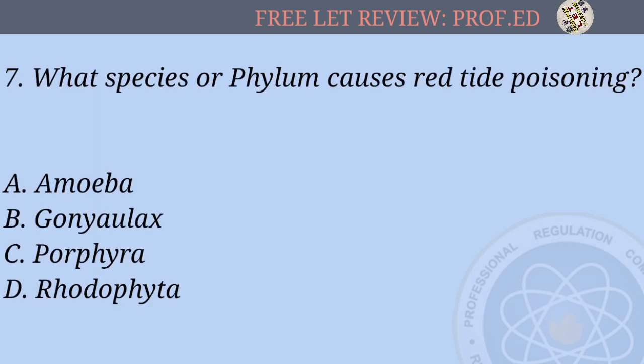Question 7: What species or phylum causes red tide poisoning? A) Amoeba, B) Gonyaulax, C) Porphyra, D) Rhodophyta.